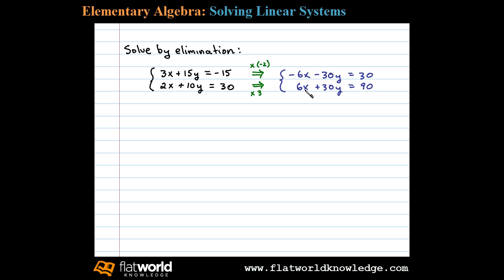So here the variable X is aligned to eliminate. When I add the equations together, negative 6x plus 6x is 0x, negative 30y plus 30y is also 0. So on the left side we obtain 0 equals 120, which is a false statement. This indicates that the original system is actually inconsistent and there is no solution.